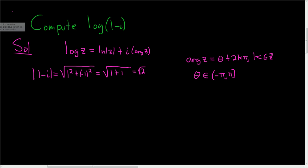Now we just have to find theta. So let's draw a quick picture. So 1 minus i is over here in the complex plane. And we have to find the angle of theta that lives in this interval that leads to this complex number.